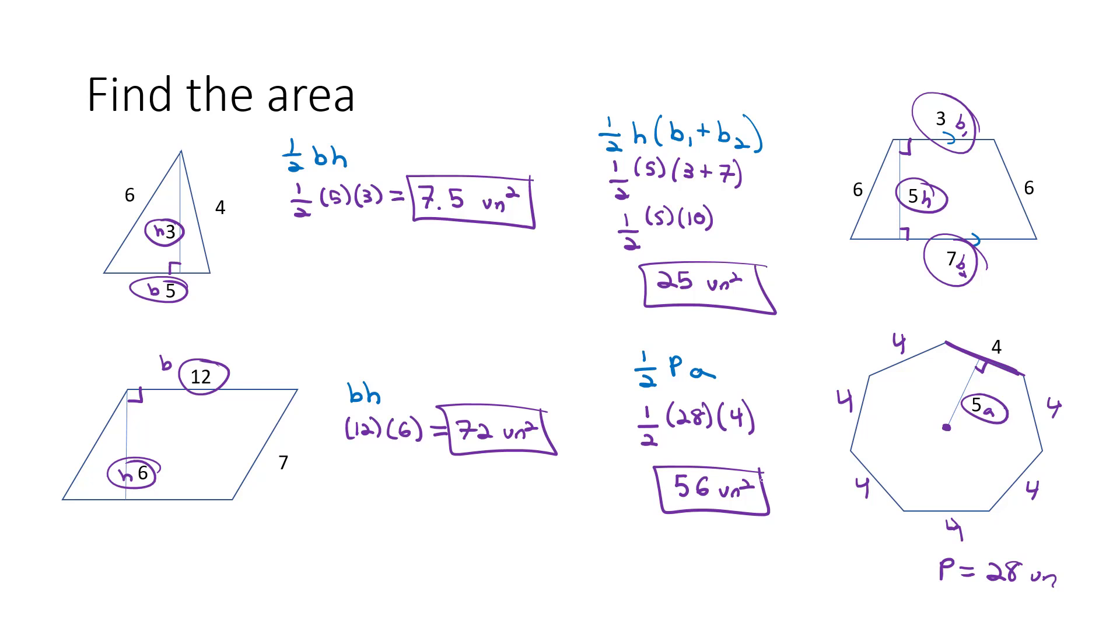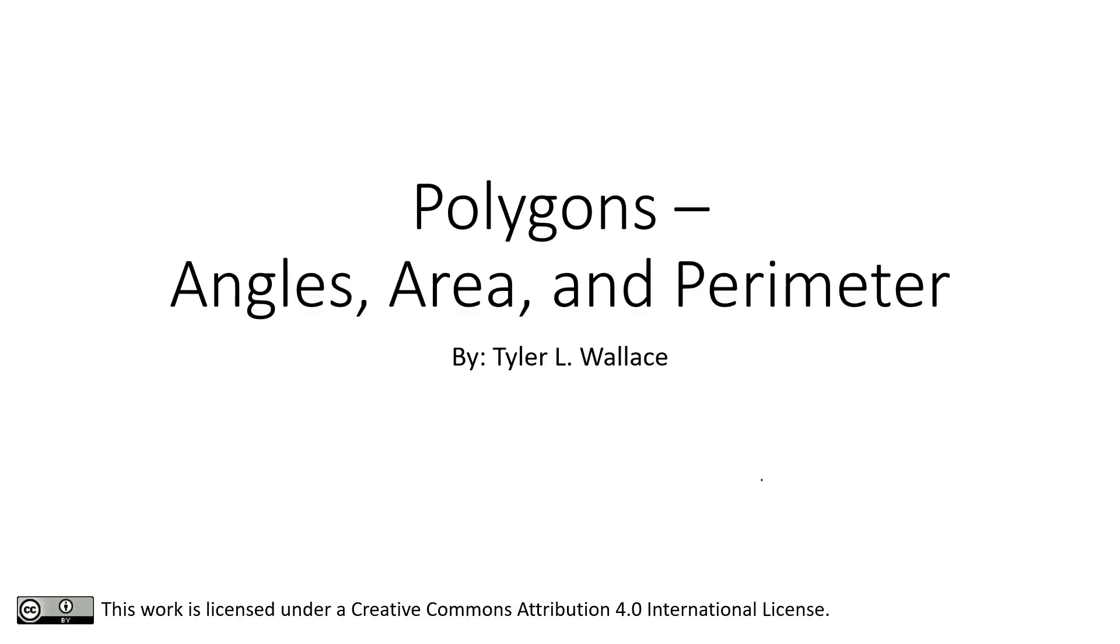Now with all of these formulas, if we know the area and we have to solve for one of the missing pieces, we can do that as well. Everything starts with those same formulas for area. We also played a little bit with angle and perimeter, but the big thing today is area of polygons. So take a look at the homework assignment, give them a good go, and let your instructor know if you have any questions.